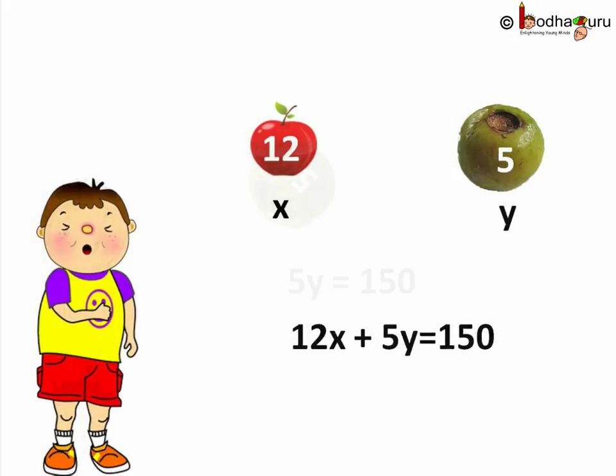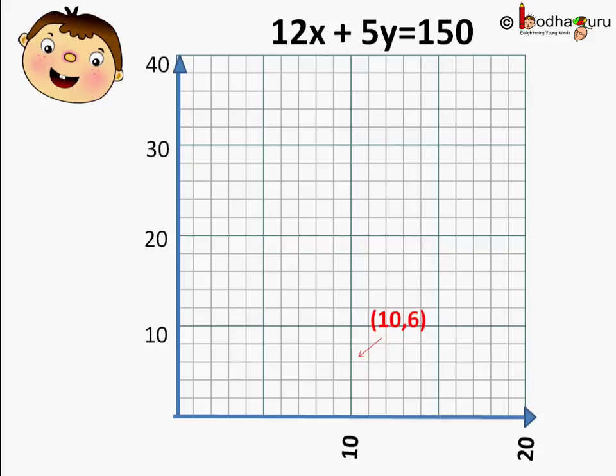Why is it called a linear equation? If we draw the graph for this equation it would be a straight line. A linear graph. Let us draw it.